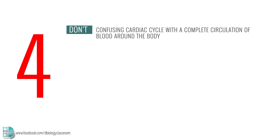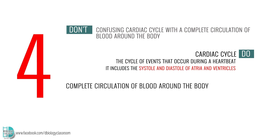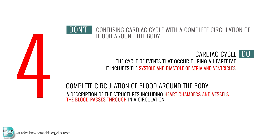Number 4: confusing the cardiac cycle with a complete circulation of blood around the body. The cardiac cycle describes the cycle of events that occur during a heartbeat — it includes the systole and diastole of the atria and ventricles. A complete circulation of blood around the body should be a description of the structures, including heart chambers and vessels, that the blood passes through in a circulation.